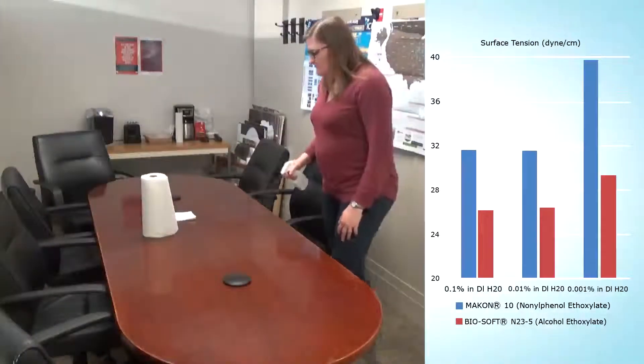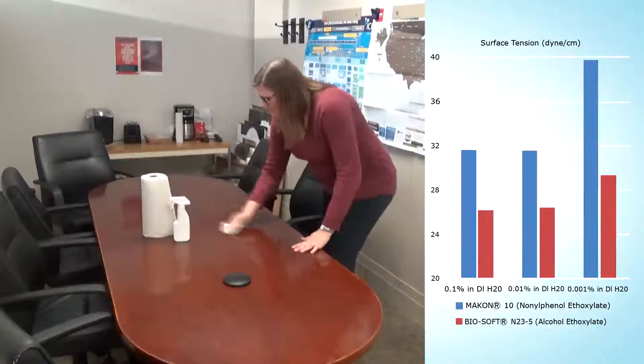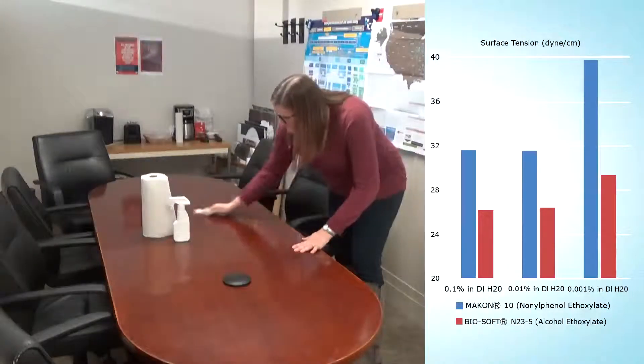One way of judging a surfactant's performance potential in water-based formulations is to measure its surface activity as a function of concentration.